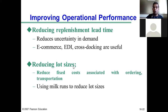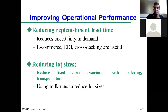Another strategy for improving operational performance is reducing lot sizes. This involves reducing fixed costs associated with ordering and transportation. If the order quantity is too large — due to communication distortion, the bullwhip effect, or quantity discounts — the company needs a way to reduce lot sizes. One approach is using milk runs to reduce lot sizes while also lowering ordering and transportation costs.